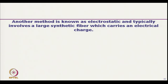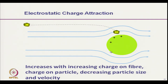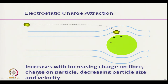Another mechanism is electrostatic charges. The fiber is charged with positive charge, while the negatively charged particle gets attracted. This effect increases with increase in charge on the fiber — higher charge attracts more particles — and also with increase in charge on the particle, decreasing particle size, and reducing velocity. The best results are achieved when the velocity of the stream is low.